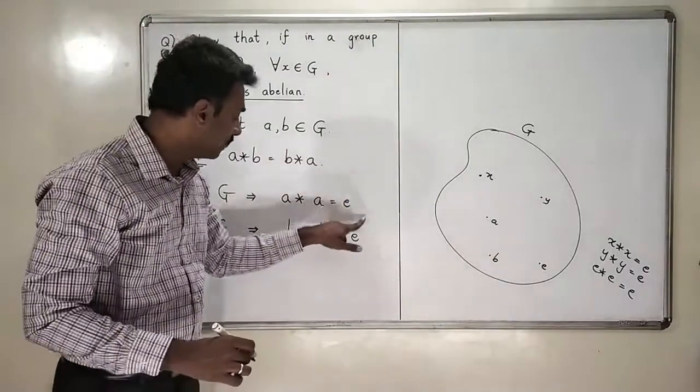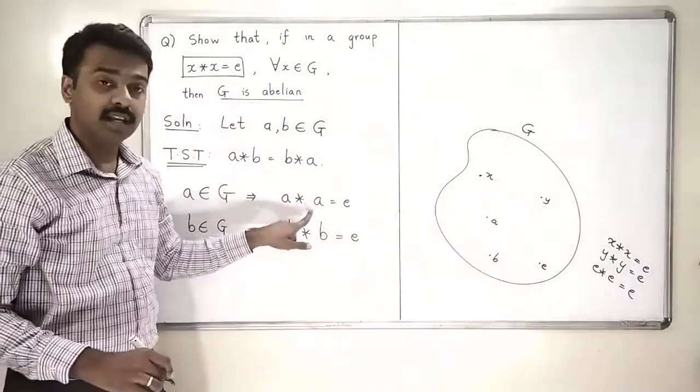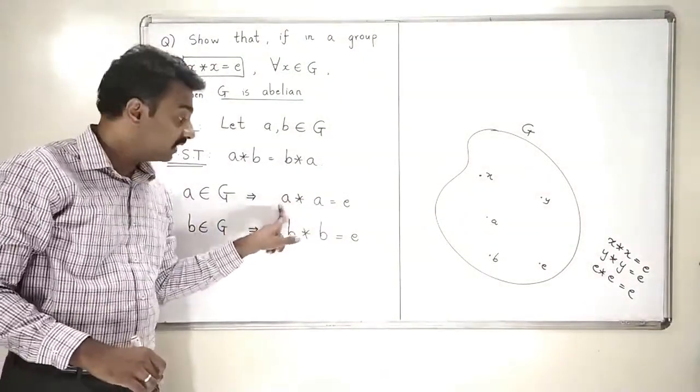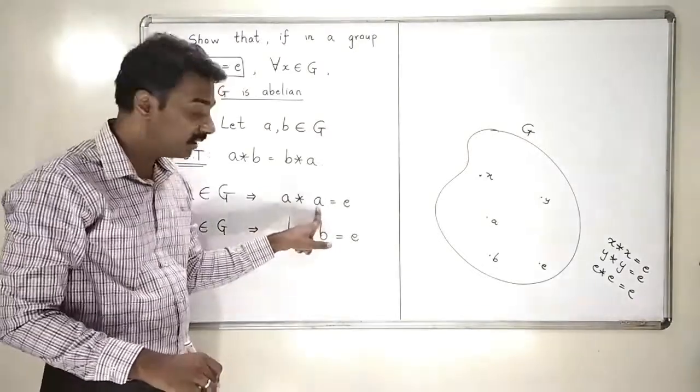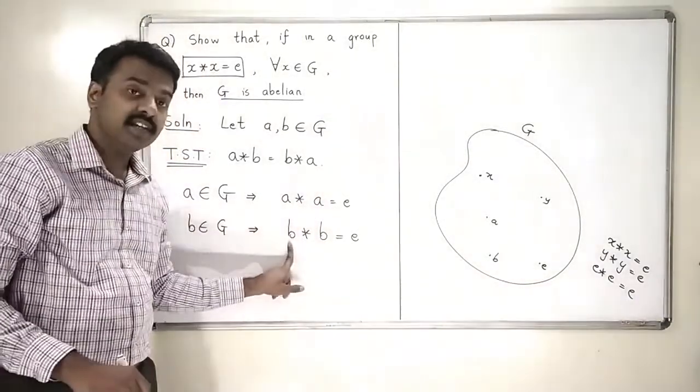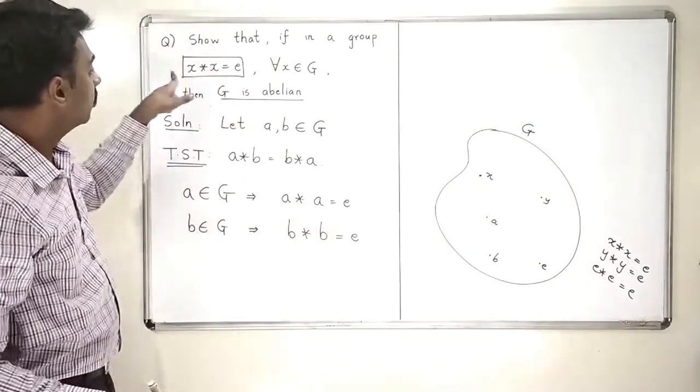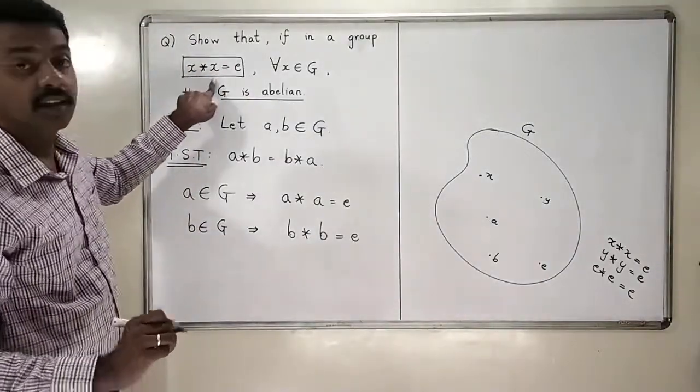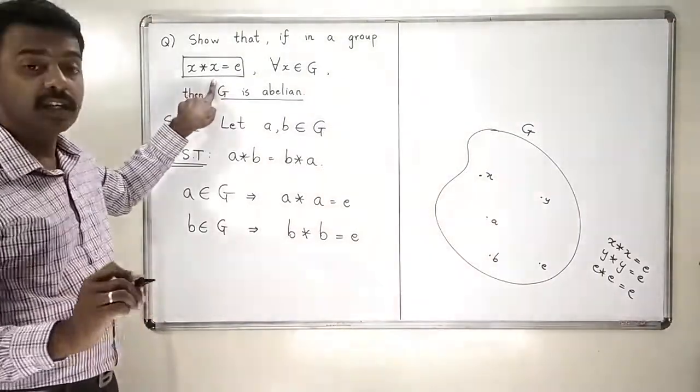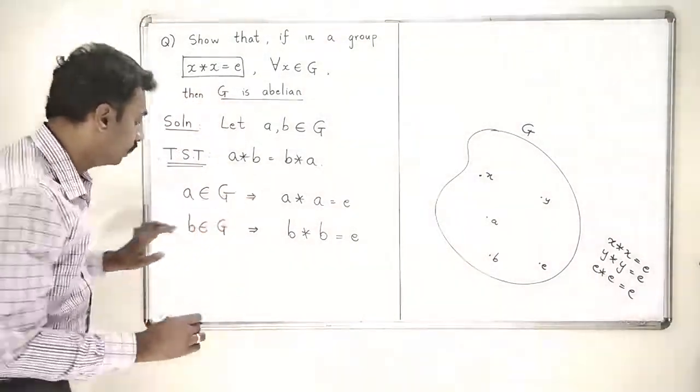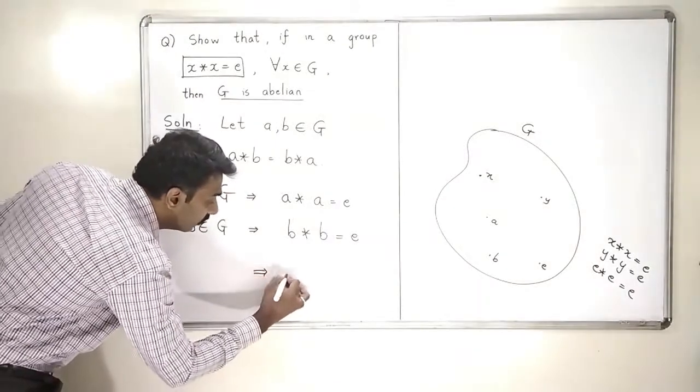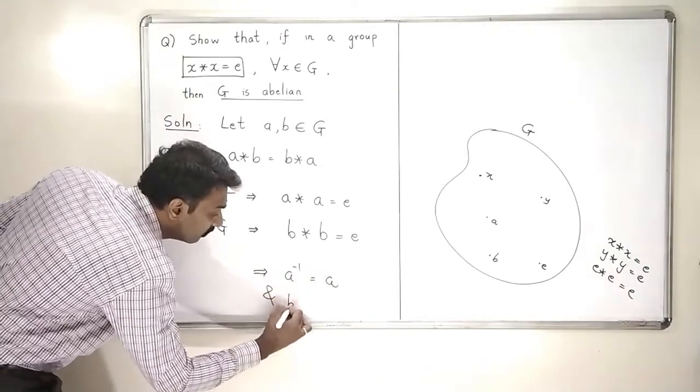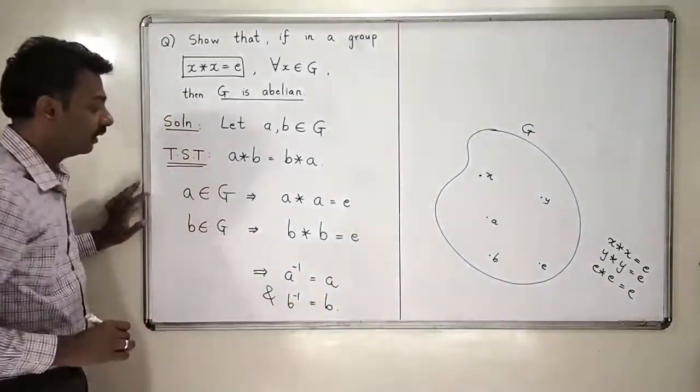Now, let us pay attention to what is the meaning of a star a is identity. A star a is identity means inverse of a is again a, right? And inverse of b is b. In general, what does this property say? Inverse of any x is the same element. So this element is inverse of itself. So this means that a inverse is equal to a, and b inverse is also equal to b.